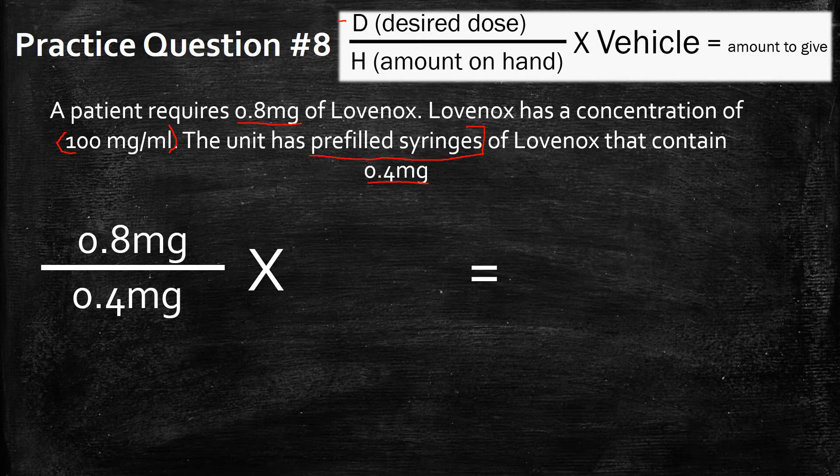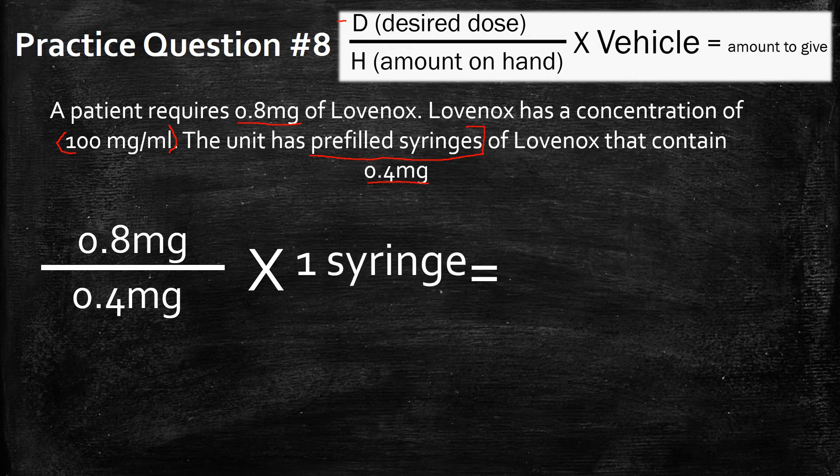They don't have volumes like push down halfway and you'll have a certain amount — these don't work like that. You push down all the way and they typically self-retract. So the vehicle is going to be one syringe, one pre-filled syringe.